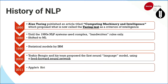NLP actually started at a very early stage, even before modern AI. It started when people wanted to understand each other's languages. In 1950, Alan Turing published an article about computing machinery and intelligence, asking 'can a computer think?' After that, he defined the Turing test as a criteria of intelligence — how smart a computer is.